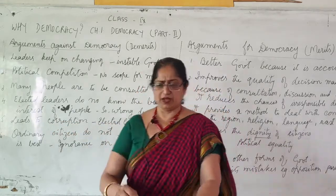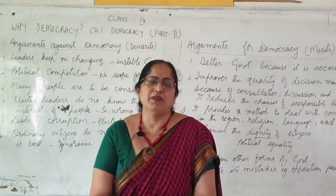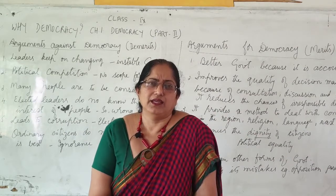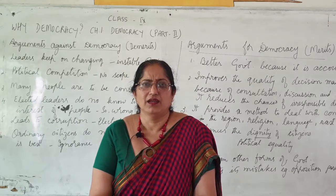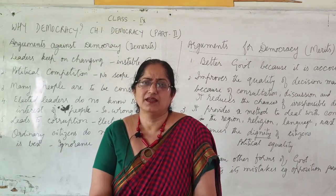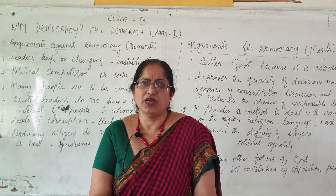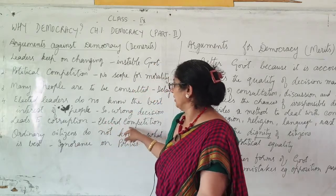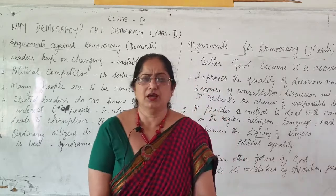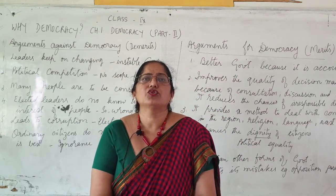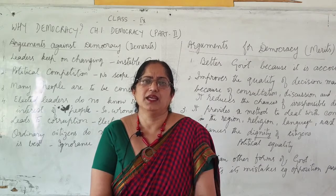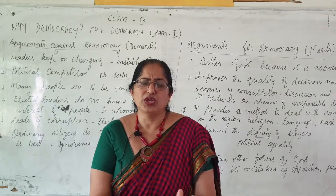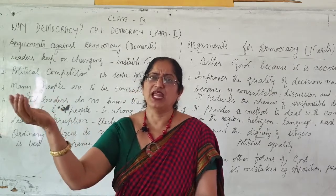The fifth demerit: it leads to corruption — bribing. In this democratic form of government there is a lot of corruption, which feeds into electoral competition. Each party wants to show they are better than the other, putting down the name of opponents. If you have listened to leaders' speeches, they spend more time criticizing others than explaining their own ideology.